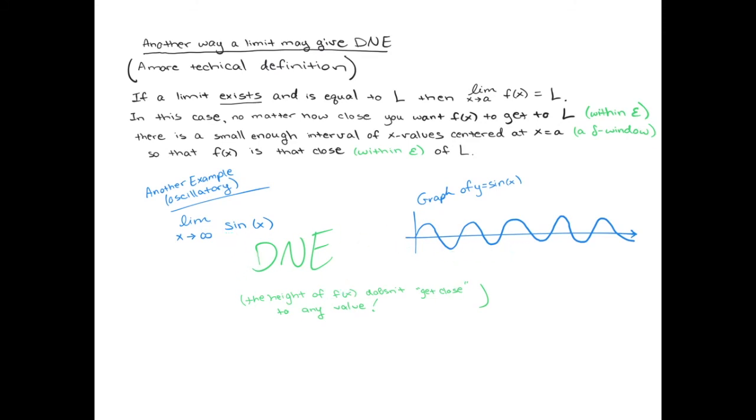People call this the epsilon delta definition. You can explore it more in the book if you're interested, especially maybe math majors might be interested to understand more of the technical aspects of the epsilon delta definition. But for our purposes, we just want to really have a good understanding of why it is that the oscillatory function like sine of x, it never approaches anything. It doesn't get infinitely close to anything. So this is another way of not existing for a limit.